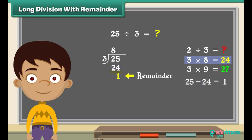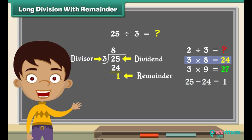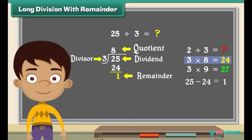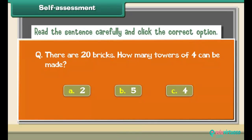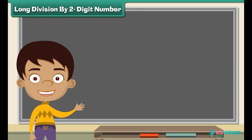Here twenty-five is the dividend, three is the divisor, eight is the quotient, and the remainder is one. Self-assessment: read the sentence carefully and click the correct option.